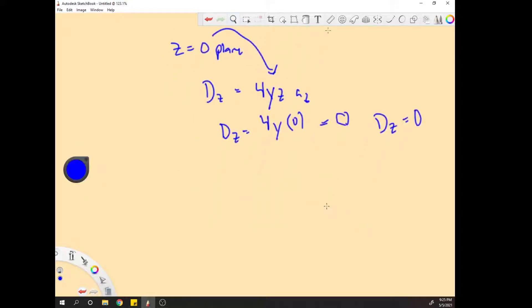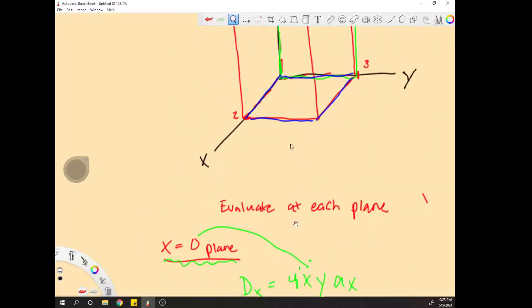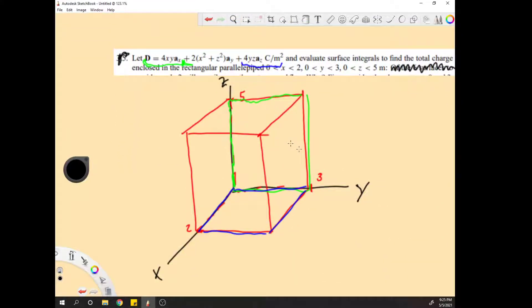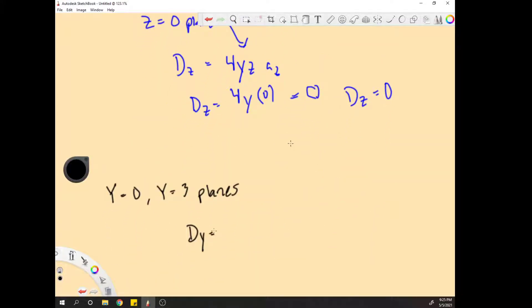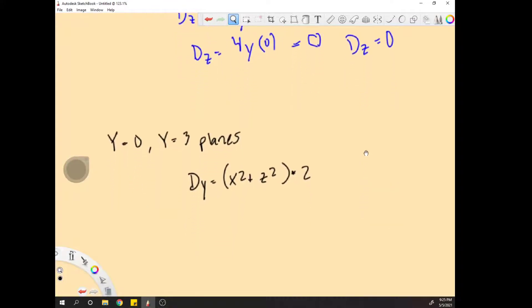What's next? Let's do the y planes. Now this one you got to be a little more clever. So we see that D y is equal to x squared plus z squared times two.